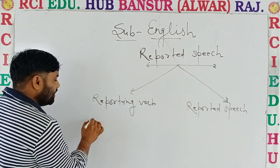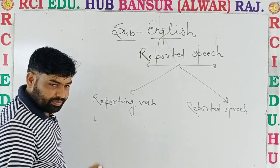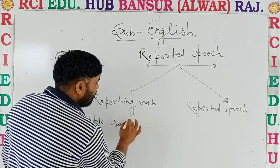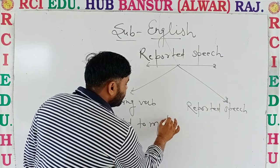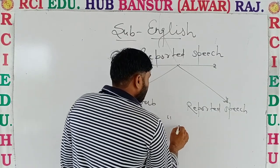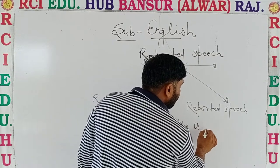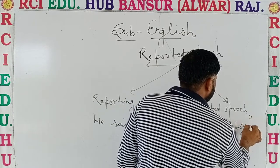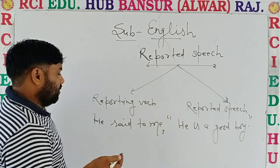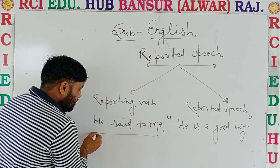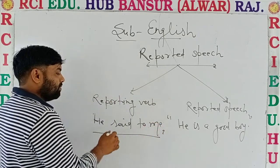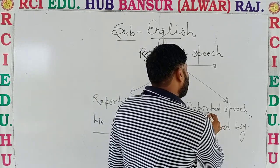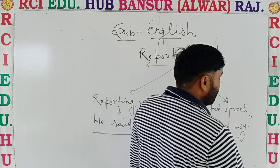For example, a sentence is given: 'He said to me, he is a good boy.' This sentence outside the commas is called the reporting verb. The part of the sentence that is written in inverted commas is called the reported speech.